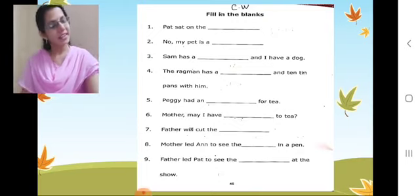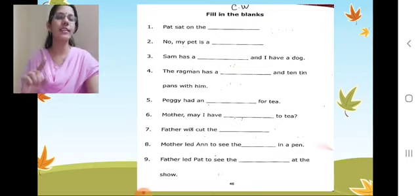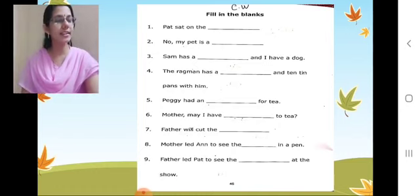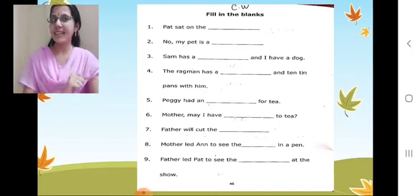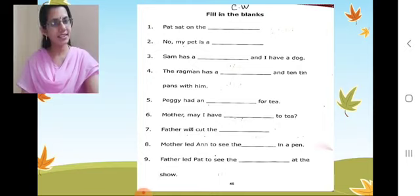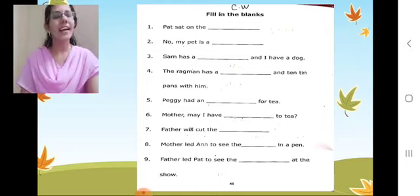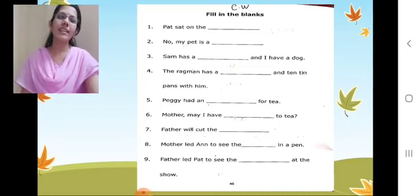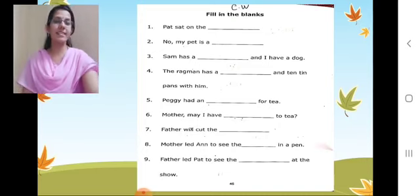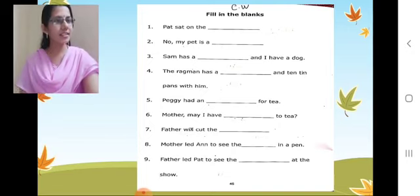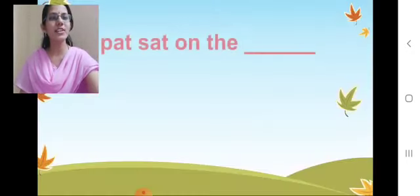Great children. First one — point your pencil at number one. What is given there? 'Pat sat on the ___.' Correct? See the page I have — you are also having the same page. So children, just tell me — is that sentence right? 'Pat sat?' No. Exactly. So what should it be? They have given us 'Pat sat on the ___,' but it should be Sam.